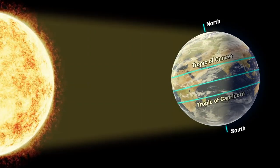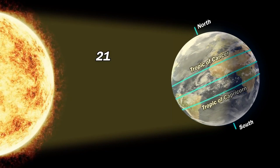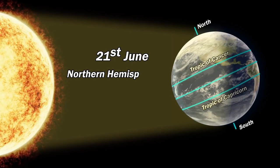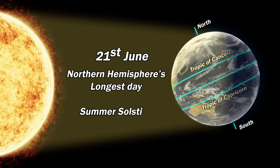Due to this movement, the Tropic of Cancer gets directly in front of the sun on 21st of June every year, making it the longest day of Northern Hemisphere. This day is popularly called as summer solstice.